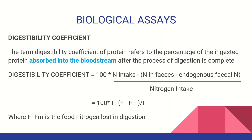If we take a protein food and digestion is complete, this gives us a quality measure of the protein — good quality, bad quality, or moderate quality. After digestion, the Digestibility Coefficient is calculated as: nitrogen intake, into 100.